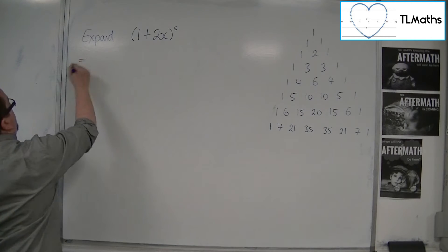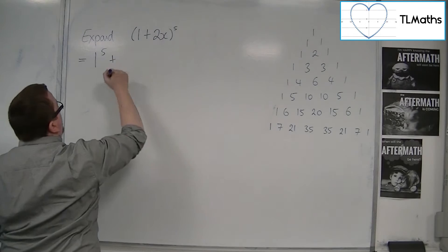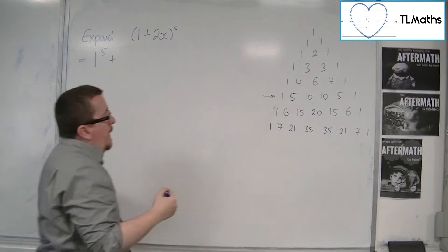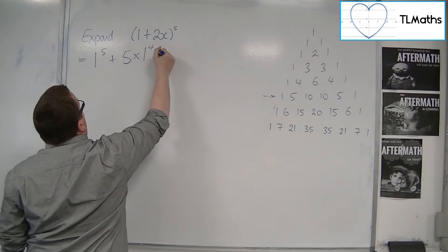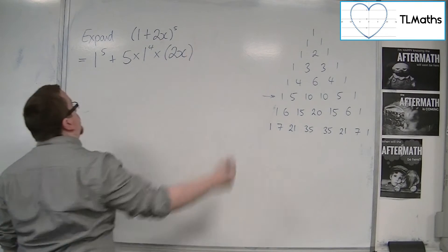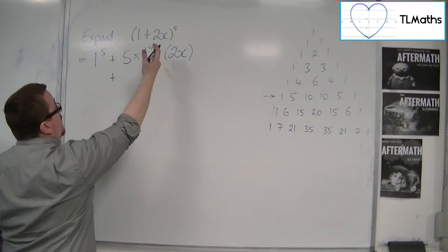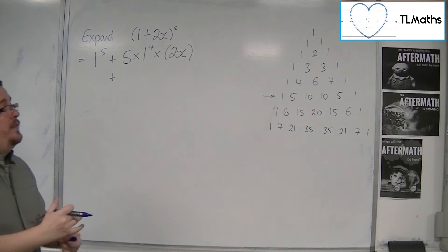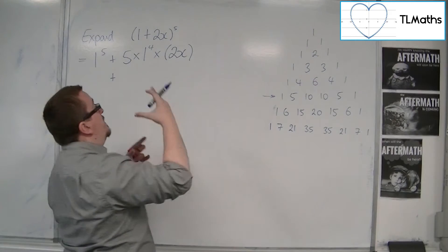So we're going to go straight in with this one. We're going to have 1 to the power of 5. When we go to the fifth row of Pascal's Triangle, 5 times 1 drops in power, the 2x increases in power — and make sure that 2x is in a bracket. Regardless of whether it's negative or not, the main reason is that otherwise you're likely to make a mistake putting it to the power.